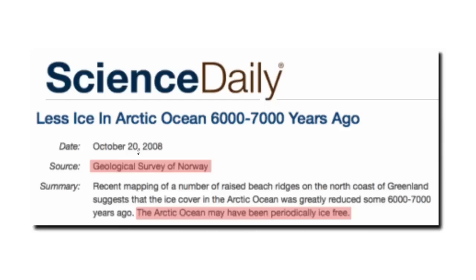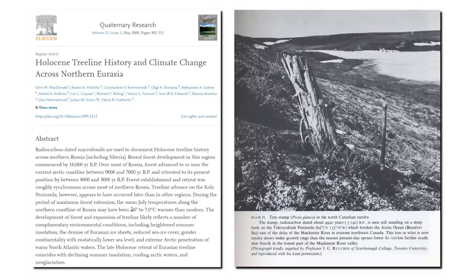But if we go back to around the time when Stonehenge was built, there was no ice in the Arctic at all. Mean July temperatures along the northern coastline of Russia may have been 2.5 to 7 degrees Celsius warmer than they are now. Trees grew all the way to the edge of the Arctic Ocean in Canada, where the treeline is now 80 to 100 kilometers farther south. This occurred when carbon dioxide levels were much lower than they are now. There's no evidence to support the idea that carbon dioxide controls Arctic temperatures.